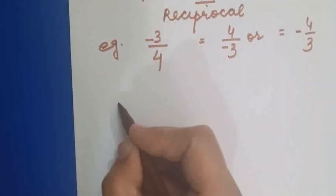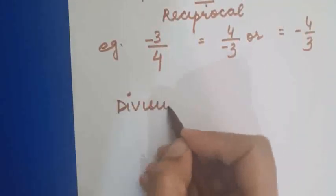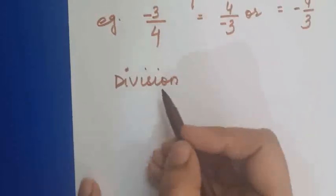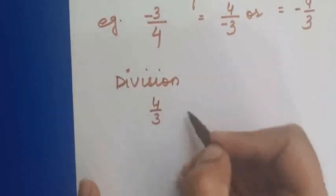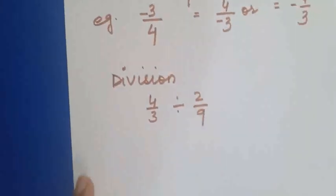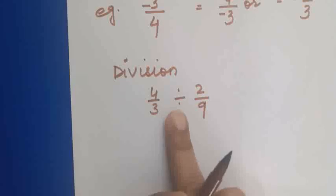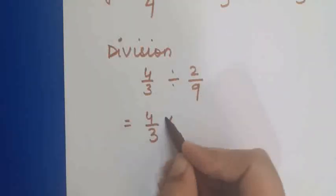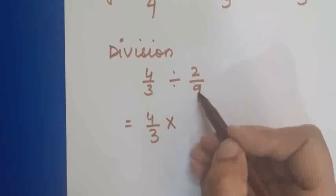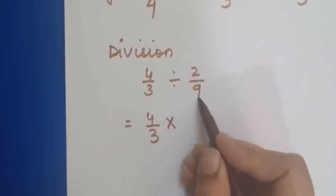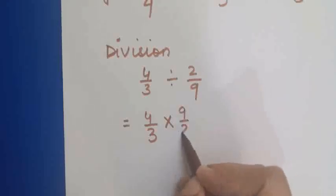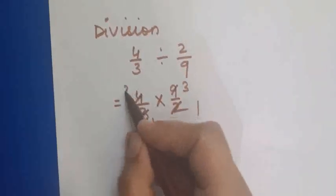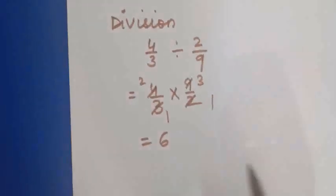The next topic is division of two rational numbers. In order to divide two rational numbers — for example, 4 upon 3 divided by 2 upon 9 — we write 4 upon 3, convert the division sign into multiplication, and take the reciprocal of the second rational number. So 2 upon 9 becomes 9 upon 2. Then it is simply multiplication: 3 and 9 cancel, 2 and 4 cancel, giving the answer 6.